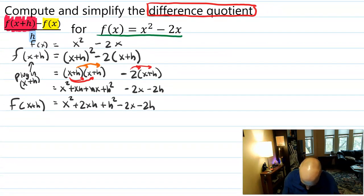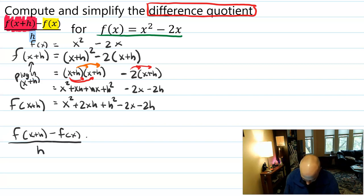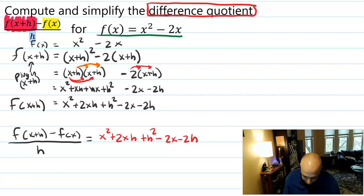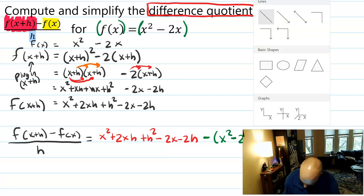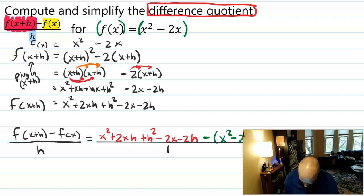Let's make some space. So f(x+h) minus f(x), all over h, would be — plugging in these terms — f(x+h) first: x squared plus 2xh plus h squared minus 2x minus 2h. Then I have to subtract f(x). I'm subtracting the entire thing, so f(x) should be in parentheses: minus quantity x squared minus 2x. That's all over h.